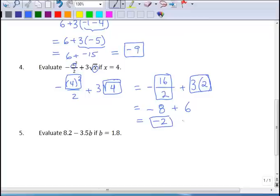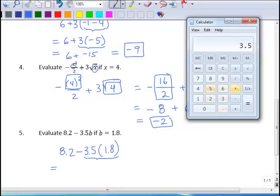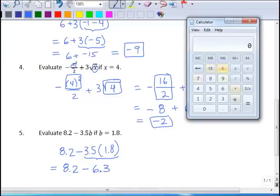And the last one here, I put some decimals in. 8.2 minus 3.5b, that's times 1.8. So assuming you've got a calculator, we're going to do 3.5 times 1.8 in the calculator. 3.5 times 1.8, 6.3. So this is 8.2 minus 6.3. 8.2 minus 6.3, that's 1.9.